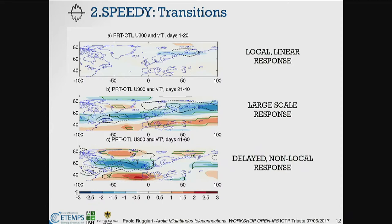We think that we can separate the response over a range of two months into a direct and linear one, a large-scale response which is confined in the troposphere, and a delayed response where the stratosphere is important.